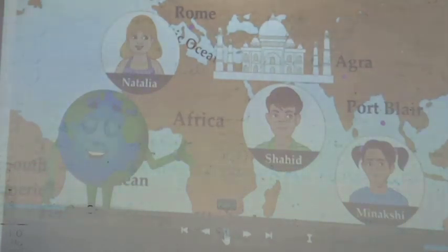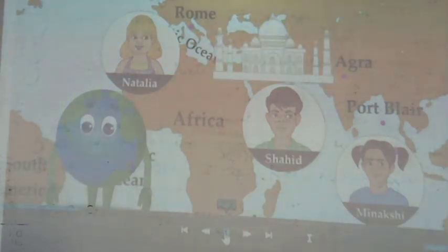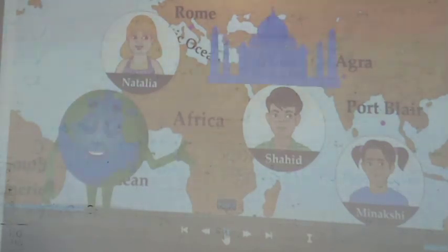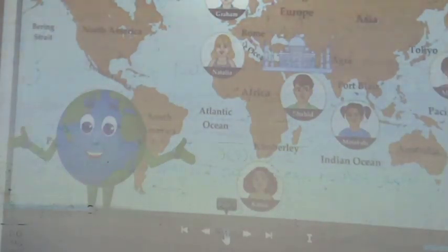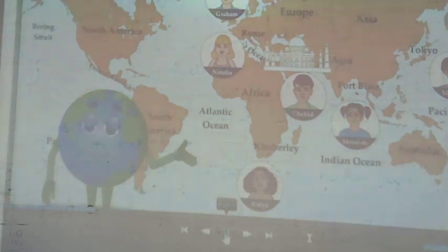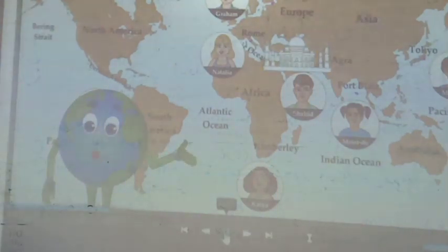Now tell me, which is the monument shown in this map? Very good. The monument shown in this map is the Taj Mahal. Has anyone of you seen the Taj Mahal? So now tell me, in which city is the Taj Mahal located? Correct. Taj Mahal is located in Agra. Now tell me, the Taj Mahal is located in which continent? Correct. Taj Mahal is located in the continent of Asia.